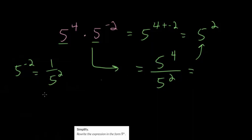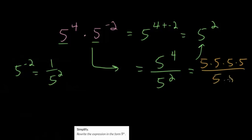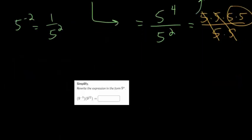But again, you want to understand why that's true. 5 to the 4th is just 4 fives multiplied together, and 5 squared is just 2 fives multiplied together. We know that 5 divided by 5 is just 1, so these cancel out and these cancel out, and you're just left with two of them. So let's go through several example problems that you'll find on the exercises.